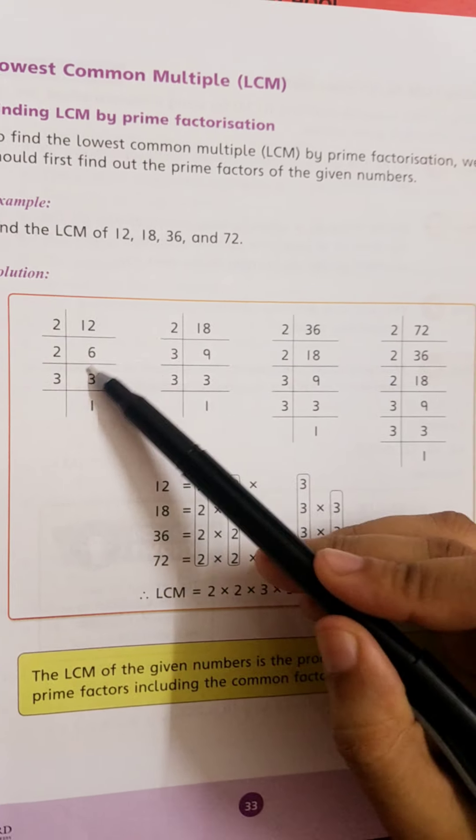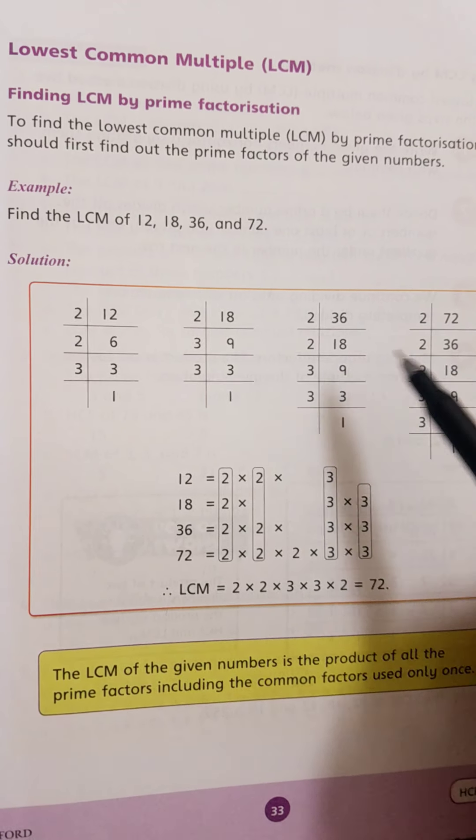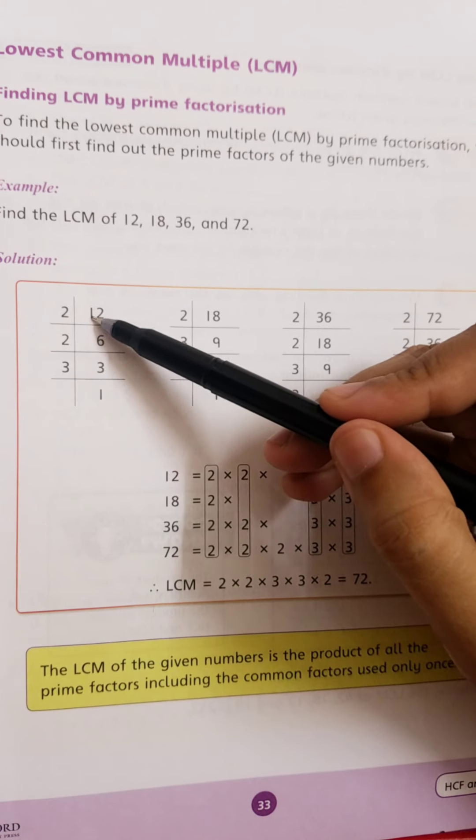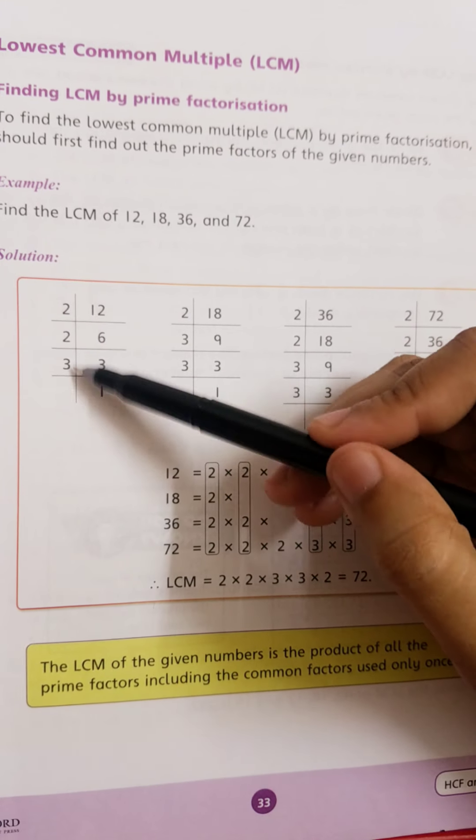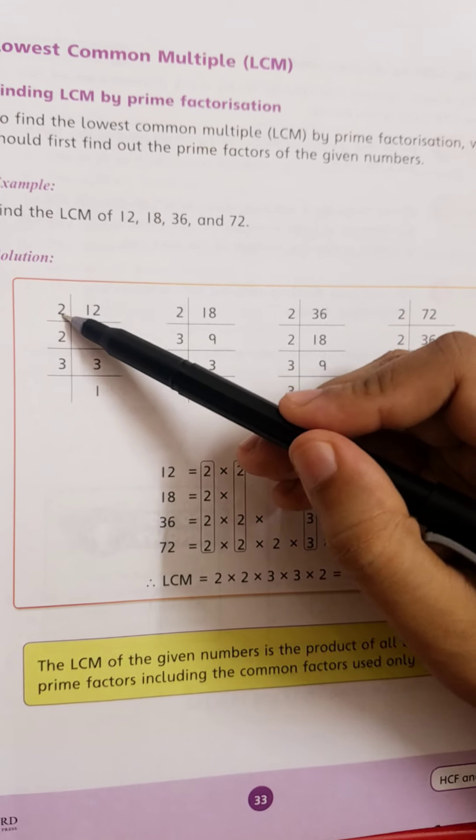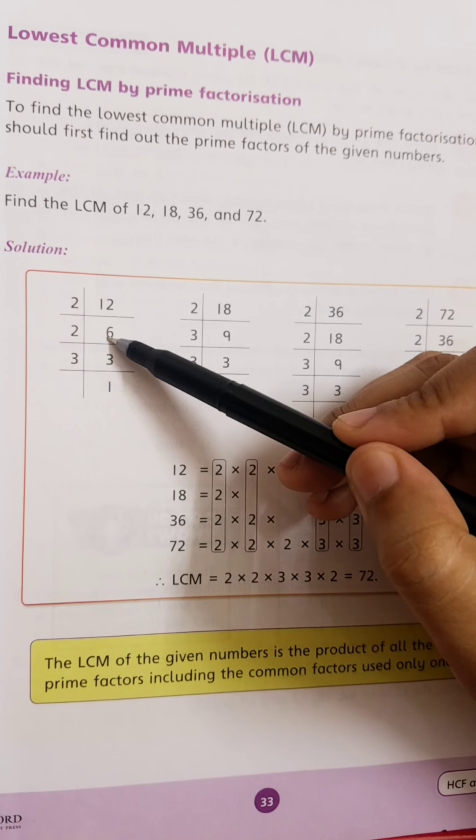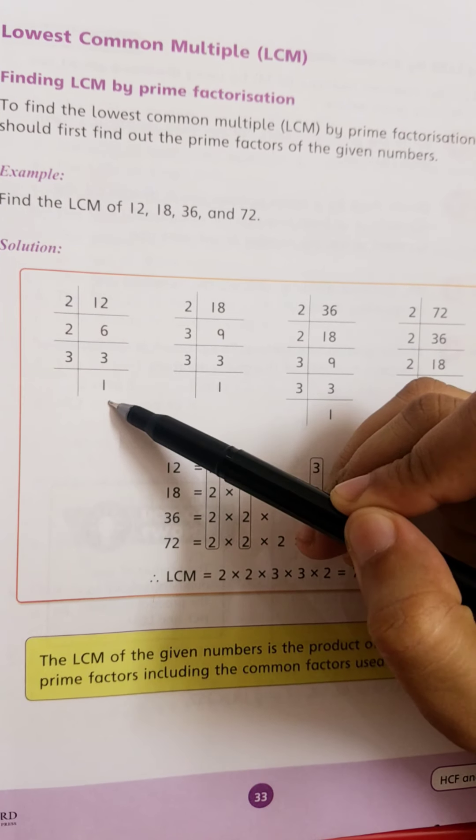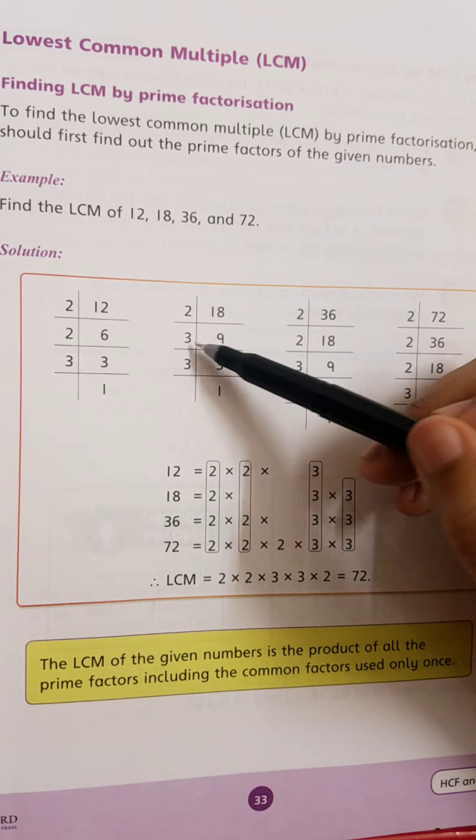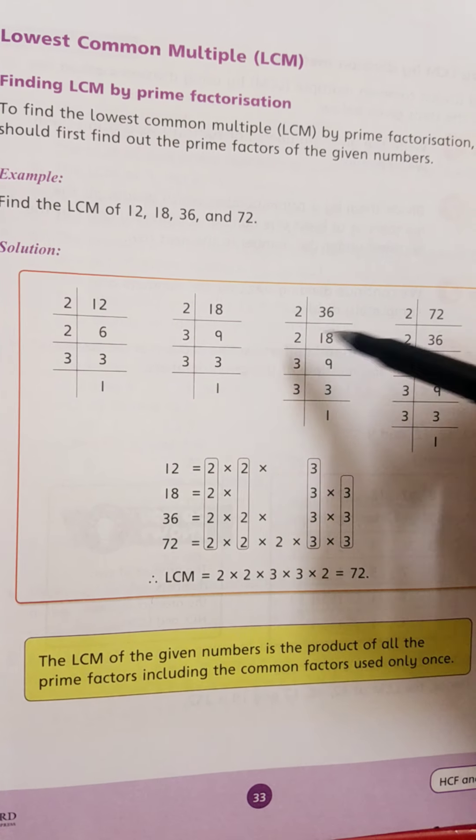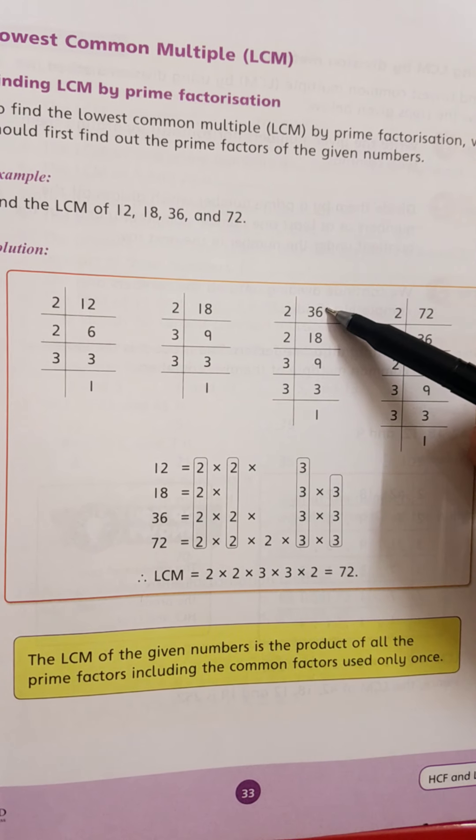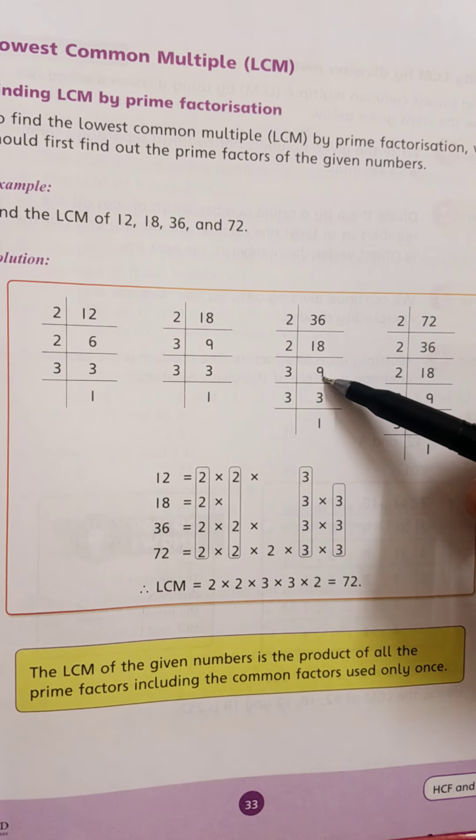We find the prime factors separately. First, 12 is an even number. 2 sixes are 12, again 6 is even number, 2 threes are 6, and 3 ones are 3. For 18, first 18 is even number, 2 nines are 18, 3 threes are 9, and 3 ones are 3. For 36, it is an even number, 2 eighteens are 36, 2 nines are 18.